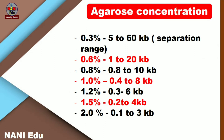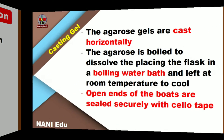In the concentration chart for agarose: for example, 0.3% agarose concentration, you can isolate 5 to 60 KB fragment size DNA or plasmid. Fragment sizes range across 0.6, 0.8, 1.0, 1.2, 1.5, and 2.0 percentage of agarose. On the right side are the molecular weights in KB (kilobases), and on the left side is the agarose concentration. This is a standard table. If you want to isolate DNA or plasmid, you can choose what type of molecular weight size in KB you need.